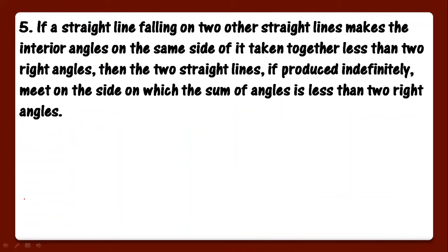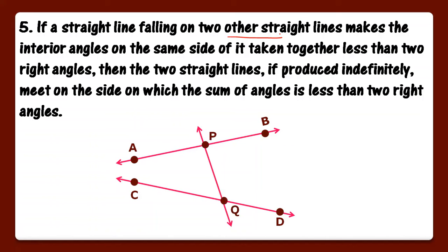Now the fifth postulate is a little trickier but it is also very easy. We will understand through a diagram. Then we will be able to understand it more easily. If a straight line falling on two other straight lines. We have two straight lines AB and CD. One straight line is falling on both these lines. Suppose PQ.